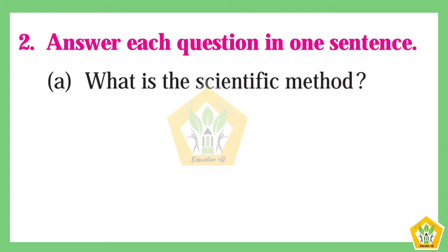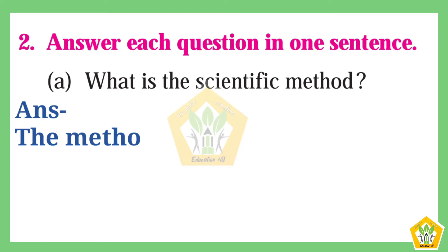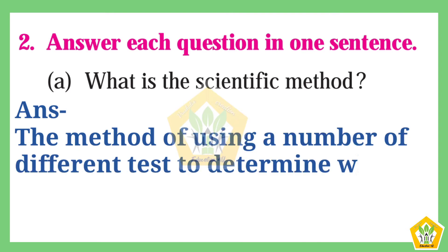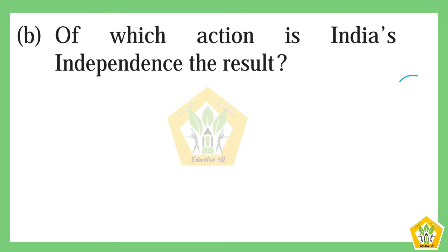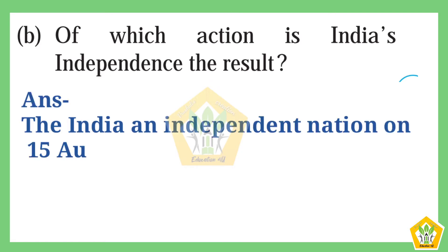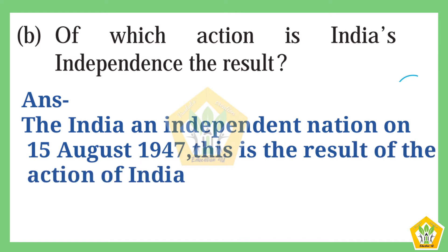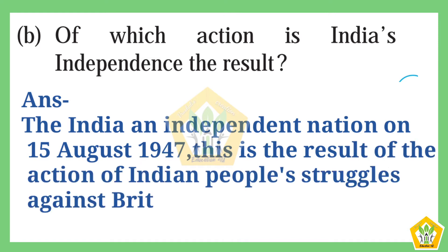Question number two: Answer each question in one sentence. (a) What is the scientific method? The answer is: The method of using a number of different tests to determine whether the evidence is reliable is called the scientific method. (b) Of which action is India's independence the result? The answer is: India became an independent nation on 15 August 1947 as a result of the Indian people's struggles against the British government.